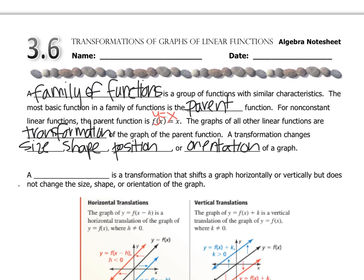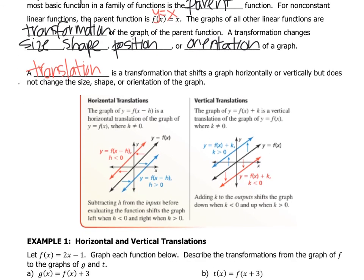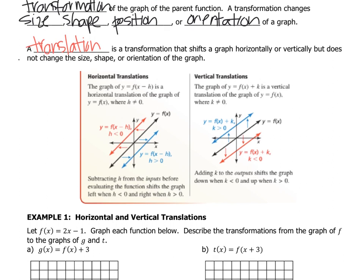The first transformation we look at is called a translation. A translation slides something across the grid — it could move horizontally or vertically, but it doesn't change any other characteristics. From the parent function, shown as the black line, it either shifted to the left, to the right, or up or down.